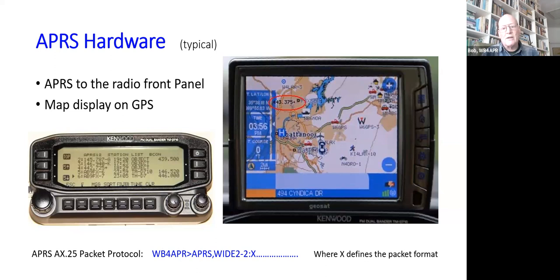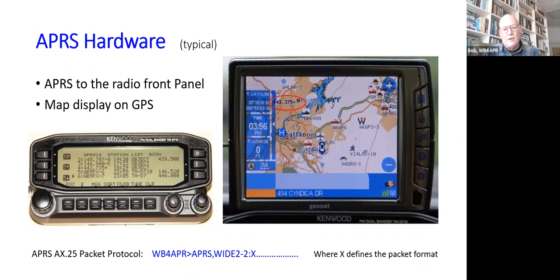A typical APRS packet is AX.25. It starts with the 'from' call sign; the 'to' call must begin with the letters 'AP' to indicate it's part of the APRS network. Then there are the digipeater fields — 'WIDE2-2' — which says send this packet out two hops in all directions through all digipeaters that hear it. The first character of the packet defines the packet format: whether it's a message, a position report, or something else.